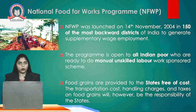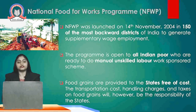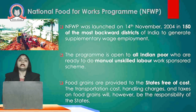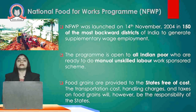The next scheme is National Food for Work Program, launched on 14th November 2004 in 150 backward districts to generate supplementary wage employment. This program is open to all Indian poor who are ready to do manual unskilled labor. Food grains are provided to states free of cost, while state governments bear transportation, handling, and storage costs. All these schemes were introduced to eradicate poverty, as many people are still below the poverty line and India is still a developing country.